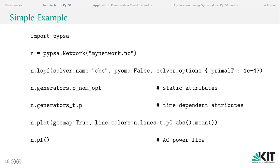Here's a simple example of how to use PyPSA in a Jupyter notebook or a simple Python script. You import it as PyPSA and then you create a network object, which is a container for all the components of the power system, such as generators, lines or loads. Then you can call the linear optimal power flow function, passing arguments such as the solver name and some solver options. You can then access static attributes such as the optimized capacities of generators or the time-dependent dispatch of generators.